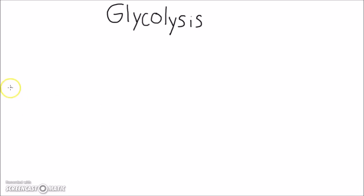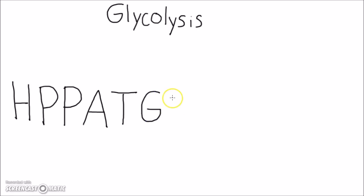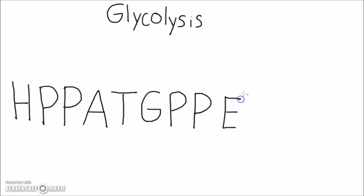The ten enzymes are: hexokinase, phosphoglucose isomerase, phosphofructose kinase 1, aldolase, triose phosphate isomerase, glyceraldehyde-3-phosphate dehydrogenase, phosphoglycerate kinase, phosphoglyceromutase, enolase, and pyruvate kinase.